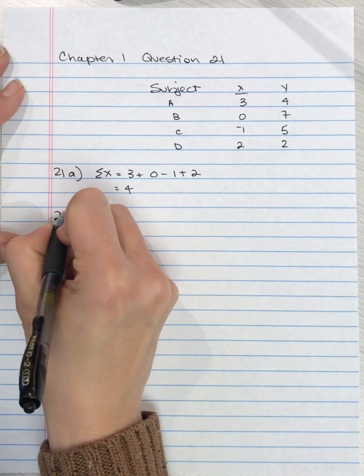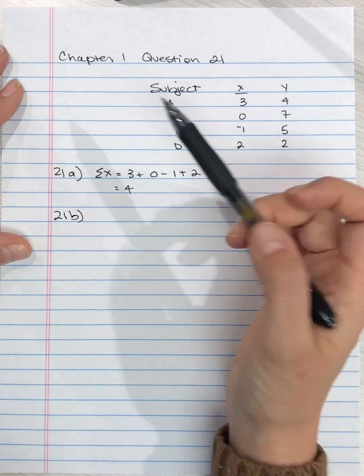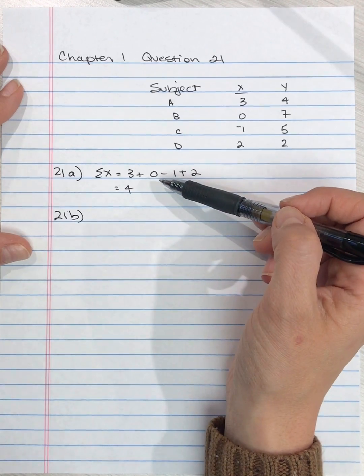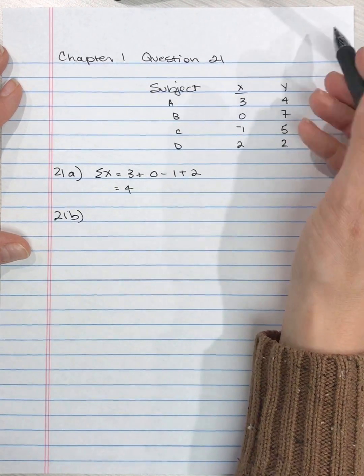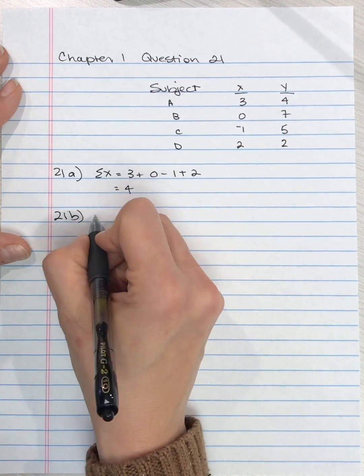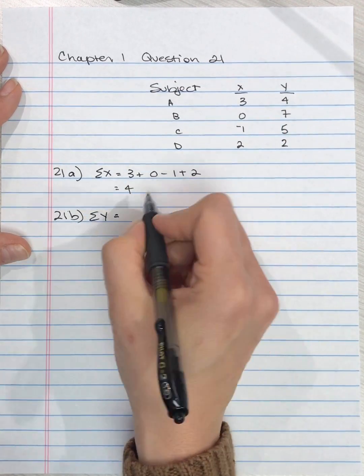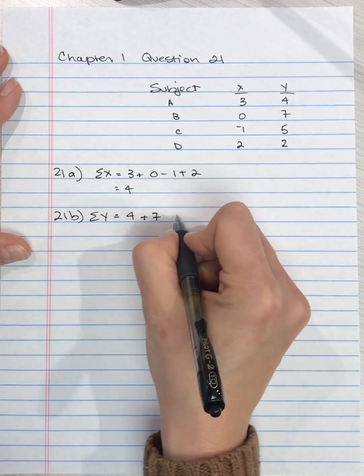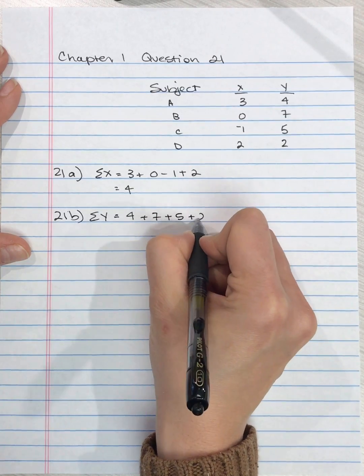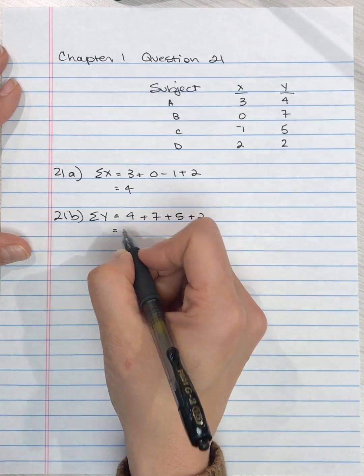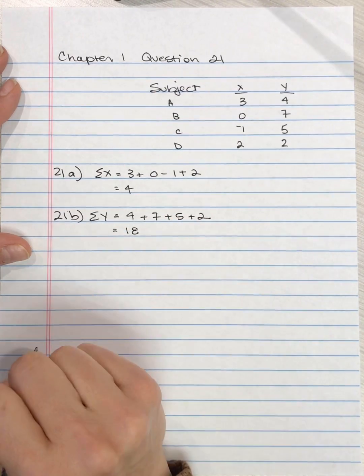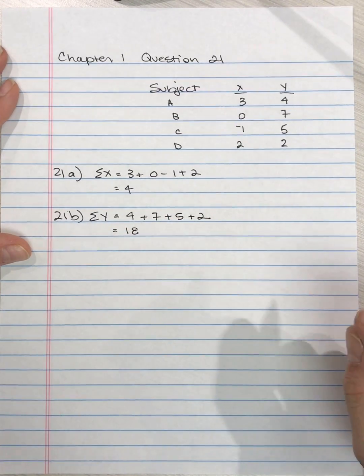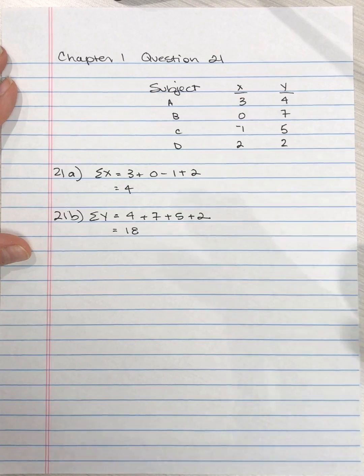And so for 21b it's asking us to do the same thing as what we just did in 21a, but instead of using the x values we're going to use the y variable values. So we're doing the sum of y which equals 4 plus 7 plus 5 plus 2 which is 18.